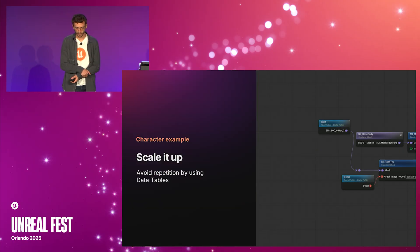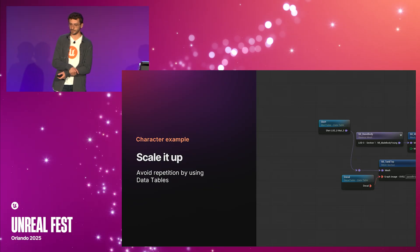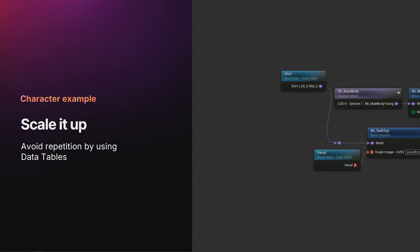Optionally, we can replace the switches with data tables, so we can easily add more content without having to constantly modify the graph. A data table is basically equivalent to a switch — it internally creates a switch entry for each row in the table.